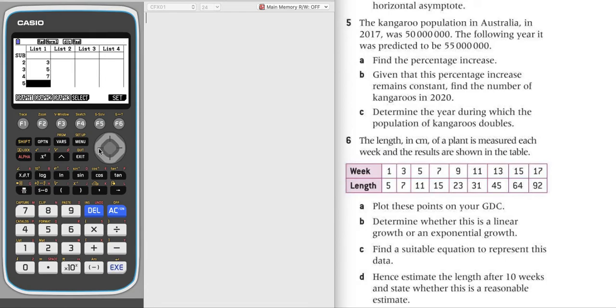3, 5, 7, 9, 11, 13, 15, 17. And then on the next column, 5, 7, 11, 15, 23, 31, 45, 64, and 92.